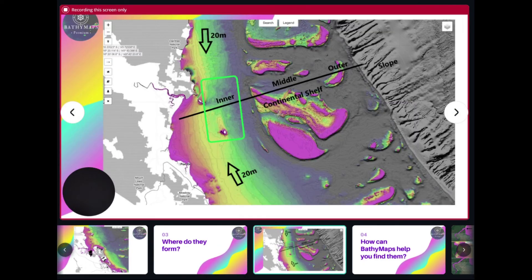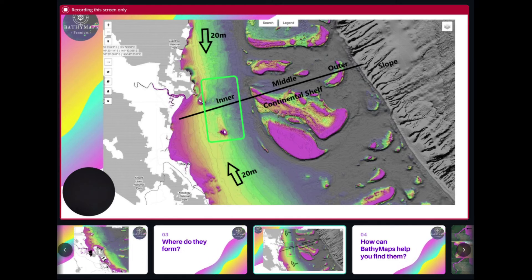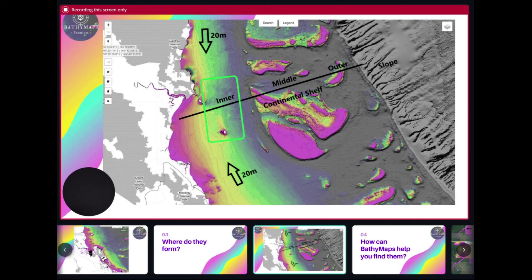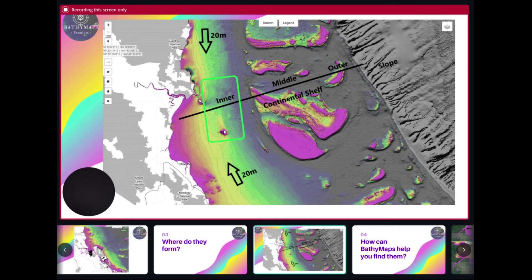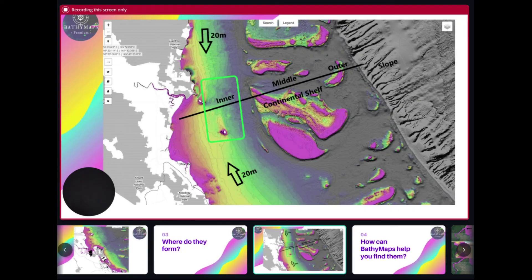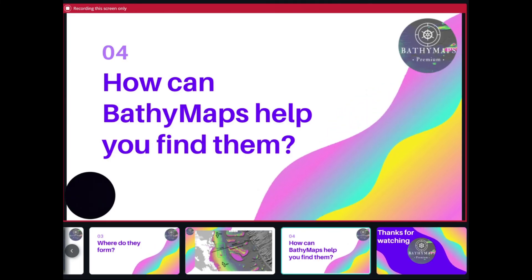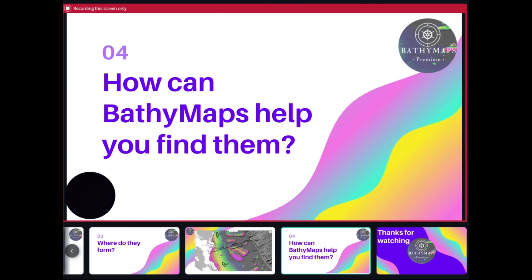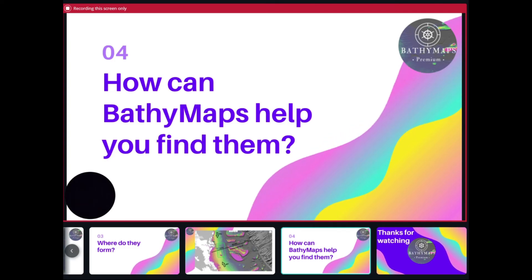So where do wonky holes form? Based on the scientific facts explained, they form along paleo channels — as we can clearly see here with the Daintree River example — and they form generally between the 20-meter and 30-meter depth contours within the inner continental shelf.